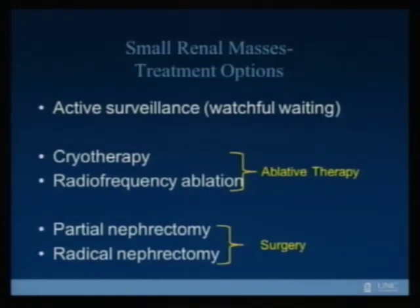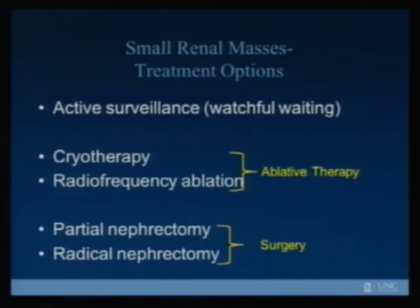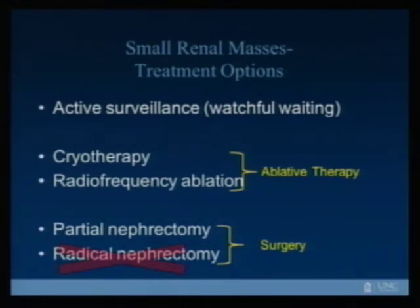What are the characteristics that define tumors that can be observed and potentially undergo delayed or no intervention? And what criteria might guide our decision between treatment and observation? Generally there are three categories of management options: first is active surveillance, also known as watchful waiting; second is ablative therapy — cryotherapy and radiofrequency ablation, where cryotherapy is freezing the tumor and radiofrequency ablation is putting a probe in the tumor to heat and destroy the tissue. These are newer therapies so longer-term outcomes are less known. Third is surgery — partial or radical nephrectomy. Radical nephrectomy can be appropriate in some scenarios but is generally pretty aggressive, so we try to steer away from it when we can.